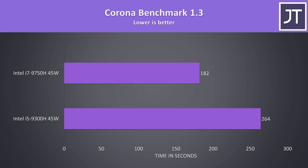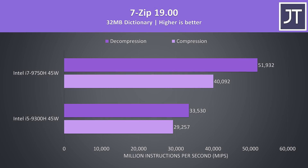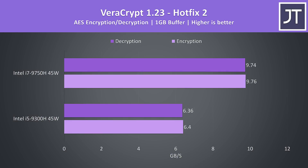I've used 7-zip to test compression and decompression speeds. The compression speed saw a 37% improvement with the i7, then a larger 55% boost when it came to decompression speed. Veracrypt was used to test AES encryption and decryption speeds. Both tasks were around 53% faster with the i7, so it seems like either the 50% additional cores or cache are helping out in this workload, and it's scaling quite nicely.